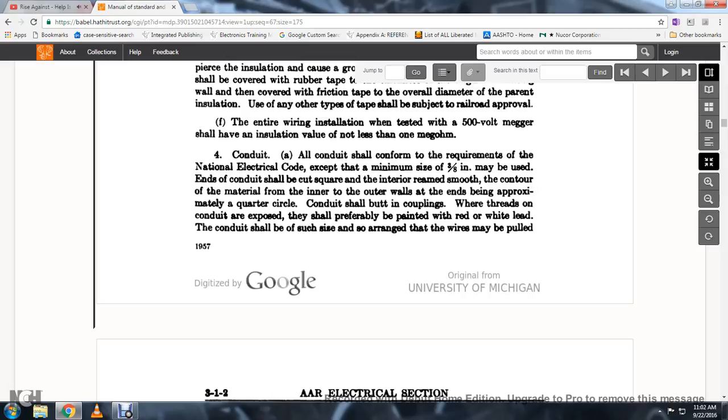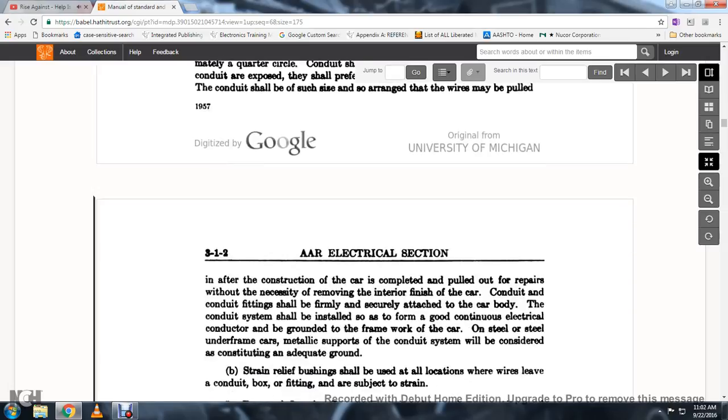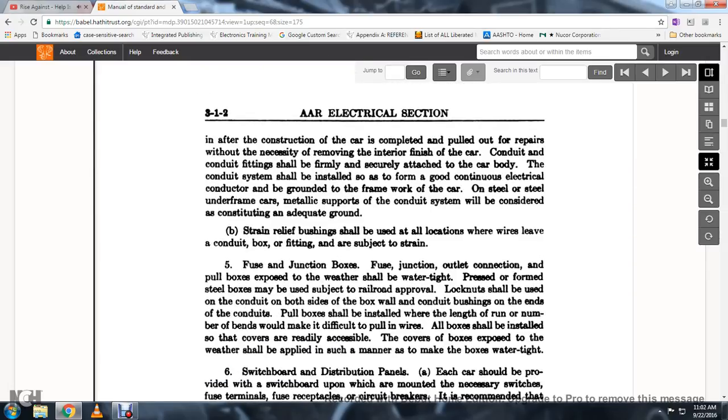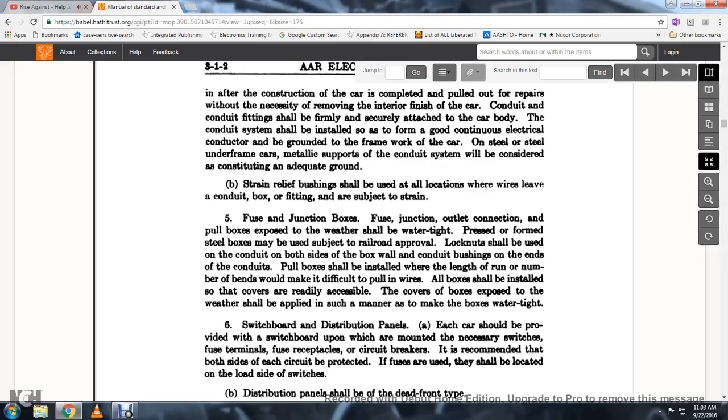The conduit shall be such size and arranged that wires may be pulled in after construction of the car is completed and pulled out for repairs when necessary without removing the interior of the car bar. The conduit and finishing fittings shall be normally secured and attached to the car body. The conduit system shall be installed to form a good continuous electrical conductor grounded to the framework of the car. Steel underframes and metallic supports from the conduit system will be considered as constituting adequate ground.